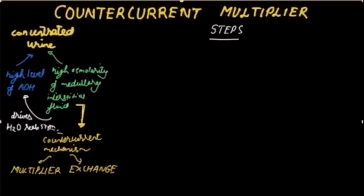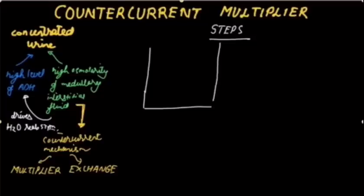Following are the steps of the counter current multiplier system. The loop of Henle has a thin descending limb, the loop, and a thick ascending limb.